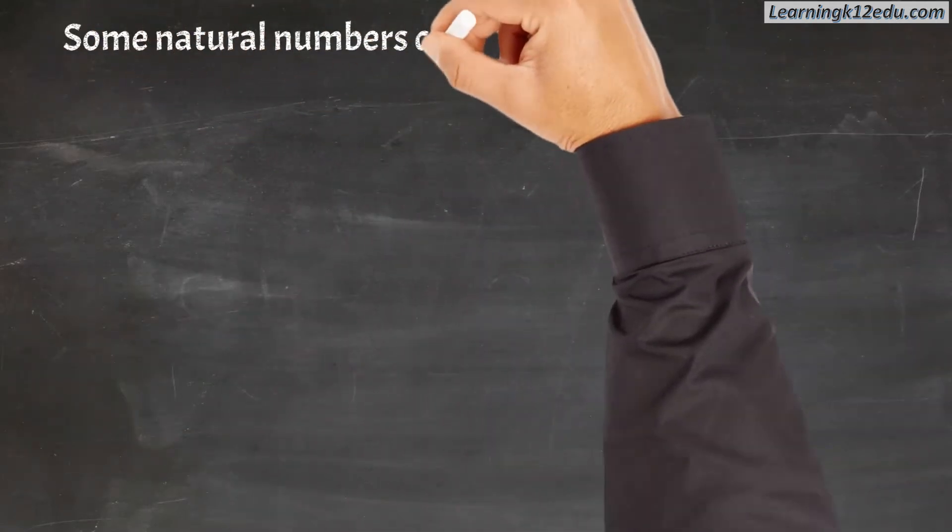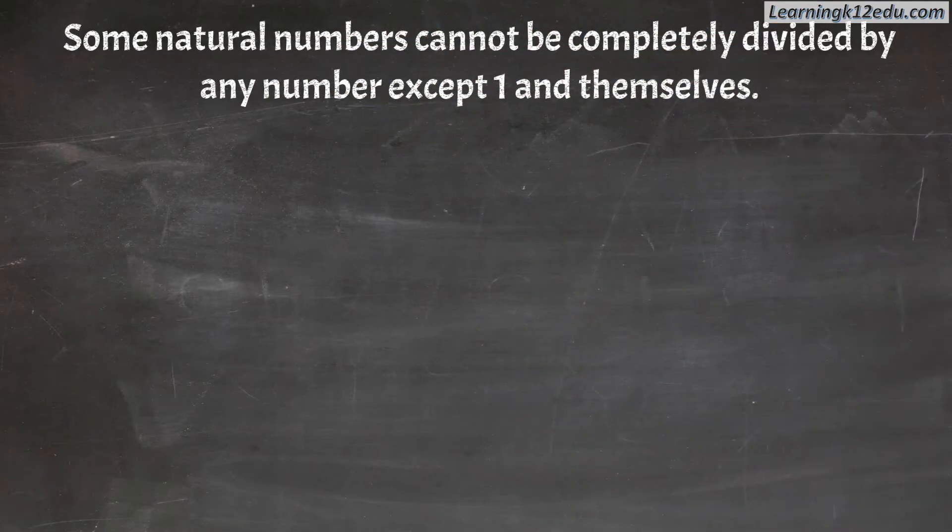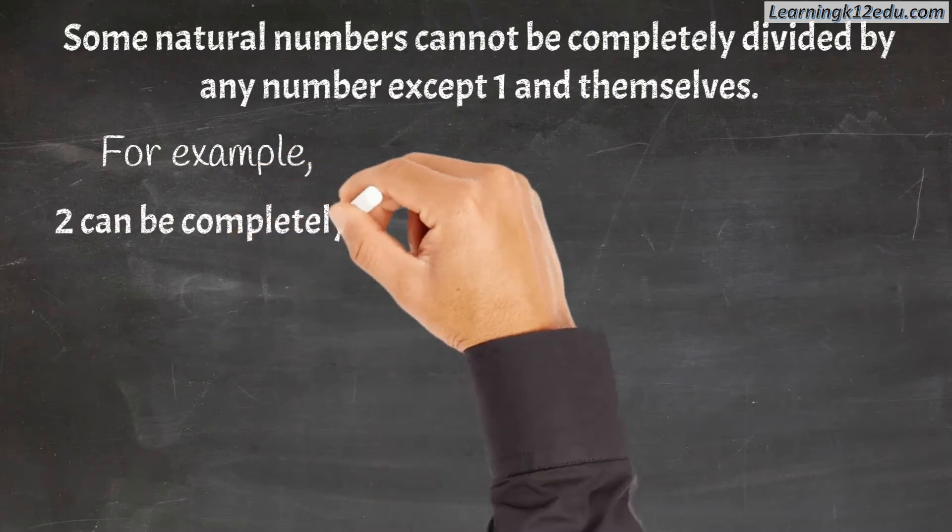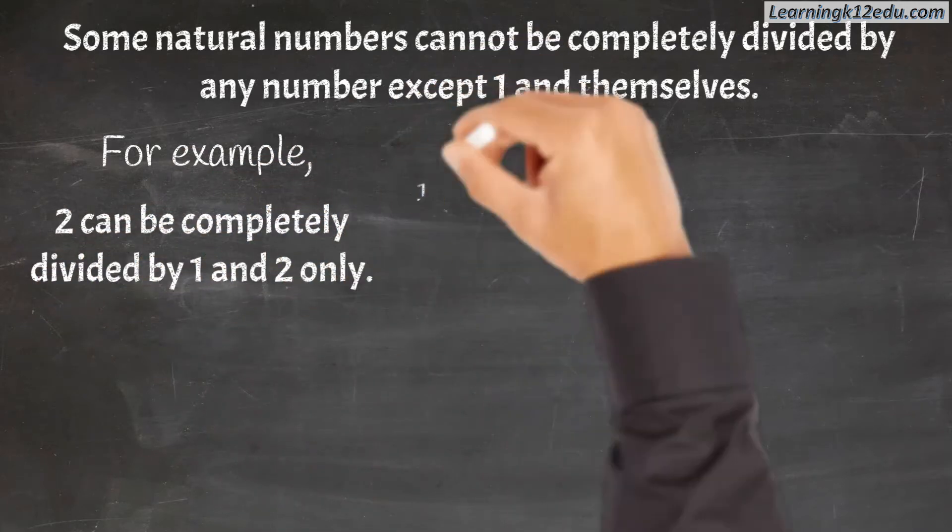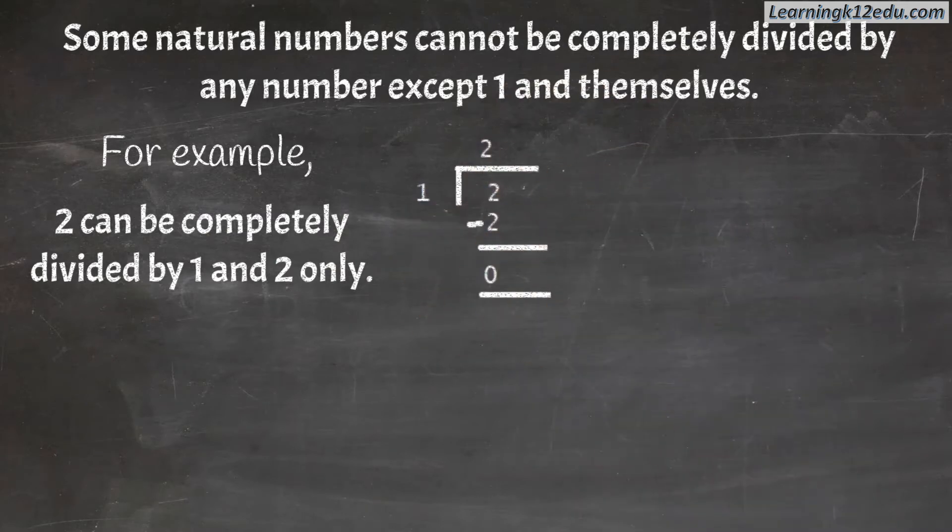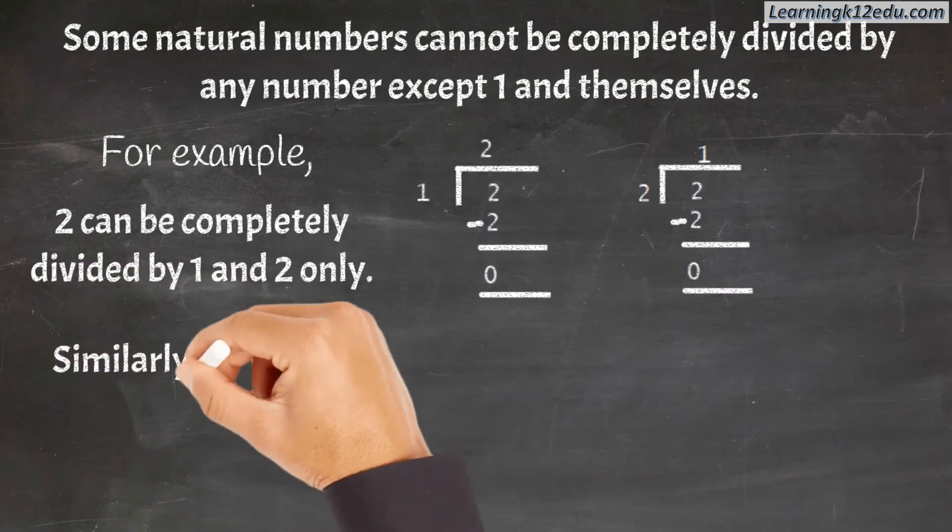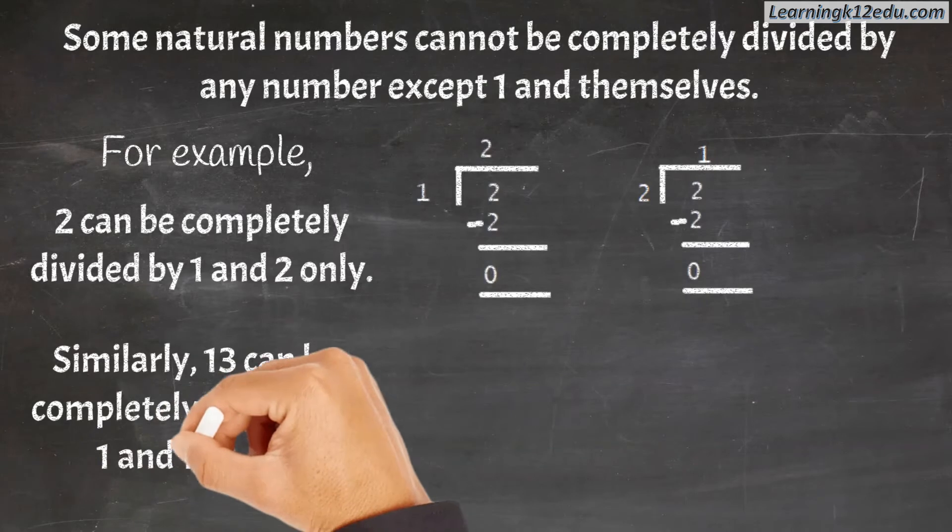Some natural numbers cannot be completely divided by any number except 1 and themselves. For example, 2 can be completely divided by 1 and 2 only. Similarly, 13 can be completely divided by 1 and 13 only.